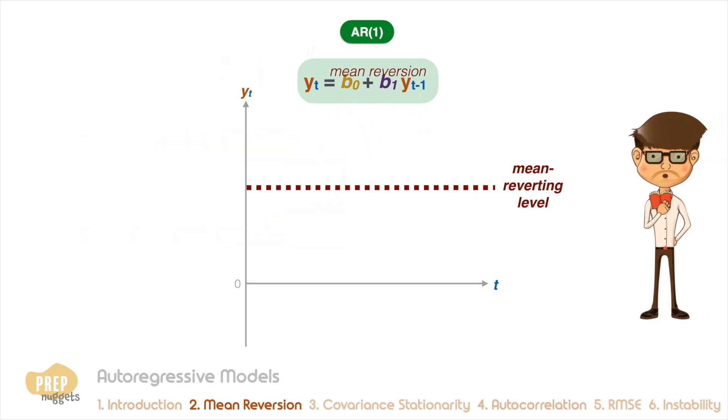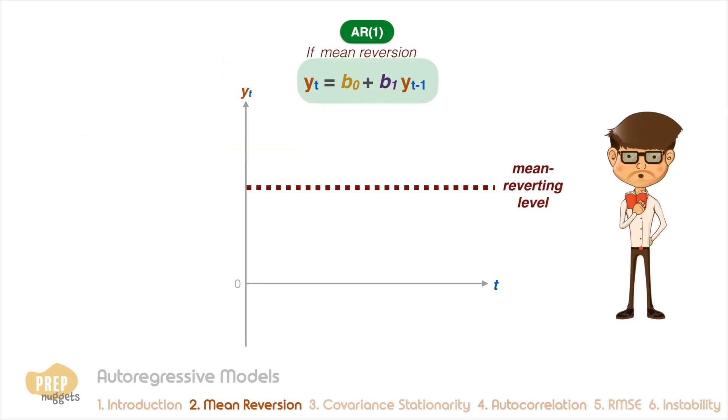It's quite easy to derive the solution for the mean reverting level. If a time series is at its mean reverting level, the model predicts that the next value will be the same as its current value. That is, the dependent variable will be a function of itself. Solving the equation, we get a mean reverting level of b0 divided by 1 minus b1.